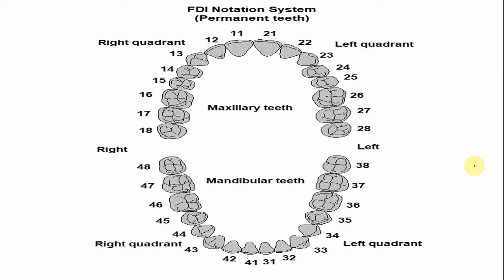In the FDI notation system, the maxillary second premolar is numbered fifteen on the right side — one indicates the right maxillary quadrant and five indicates the tooth number. On the left side, it is numbered twenty-five — two indicates the left maxillary quadrant and five indicates the tooth number.